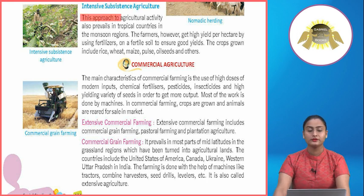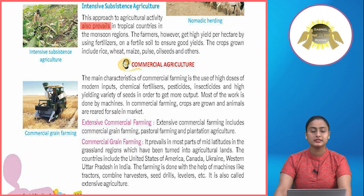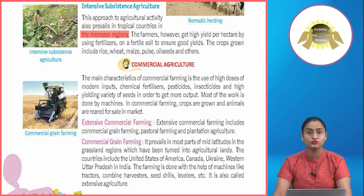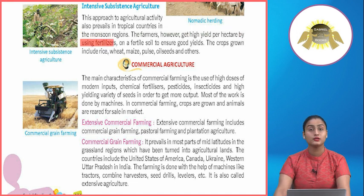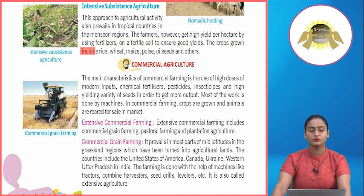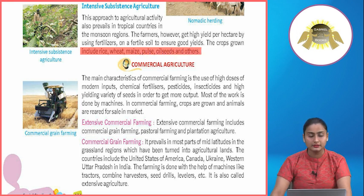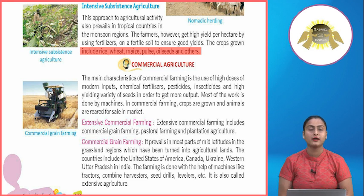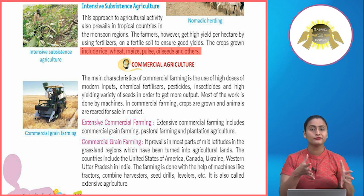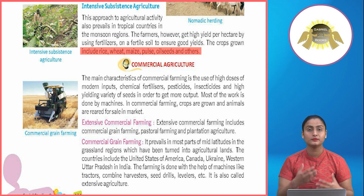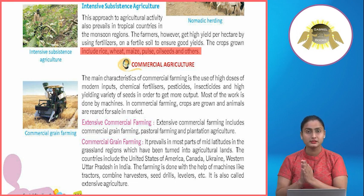Intensive subsistence agriculture: This approach prevails in tropical countries in the monsoon regions. The farmers get high yield per hectare by using fertilizers on fertile soil to ensure good yields. The crops grown include rice, wheat, maize, pulse, oil seeds and others. In certain tropical lands, a specific set of crops suitable for that particular soil is decided — this is called intensive subsistence farming.